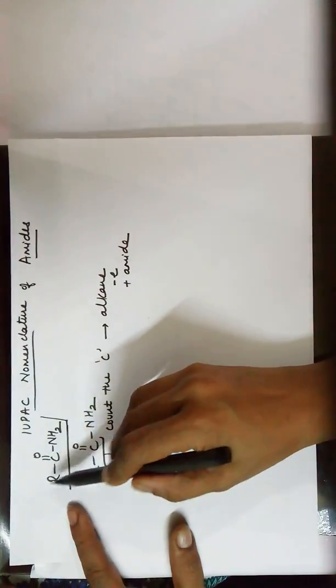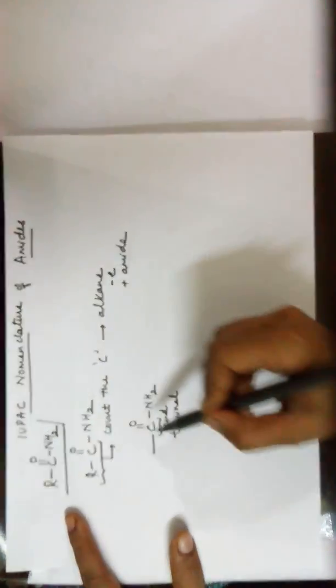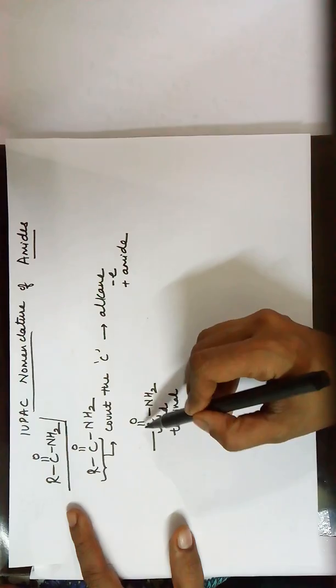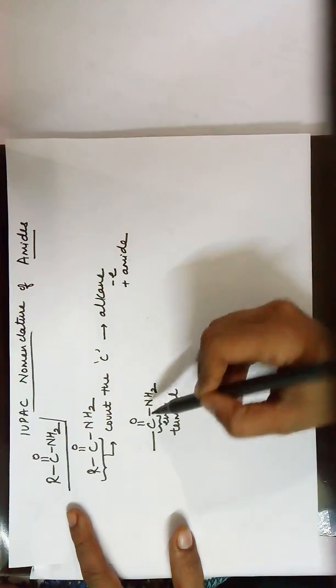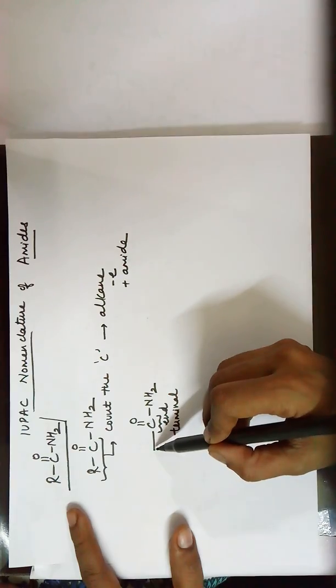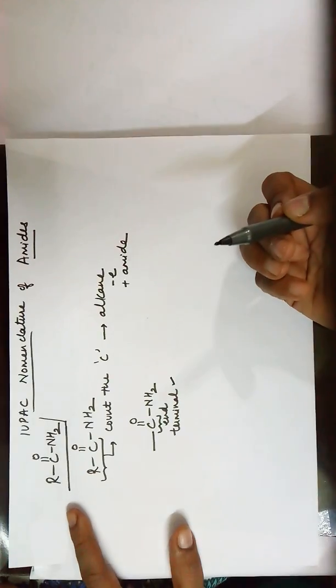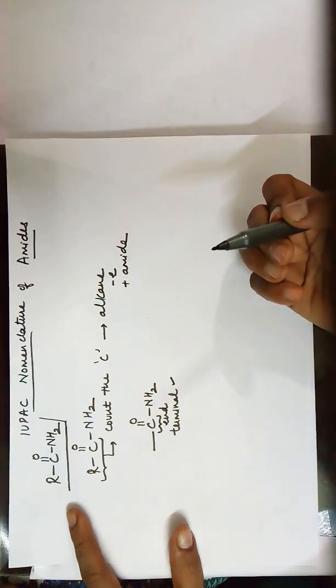The amide functional group looks like R-C double bond O-NH2. As you can very well see, the carbon here has already satisfied its three valencies. We are left with one more bond to form, therefore this group will always be at the end and is a terminal functional group. Hence you don't need to mention its position.